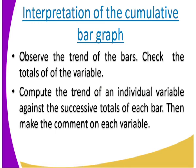Now how do we interpret the graph? First of all, we observe the trend of the bars — how are the totals moving? That is the first interpretation. Then we compute the trend of an individual variable after observing the overall totals — the largest, the smallest, and so on. Then from there we compute individually.